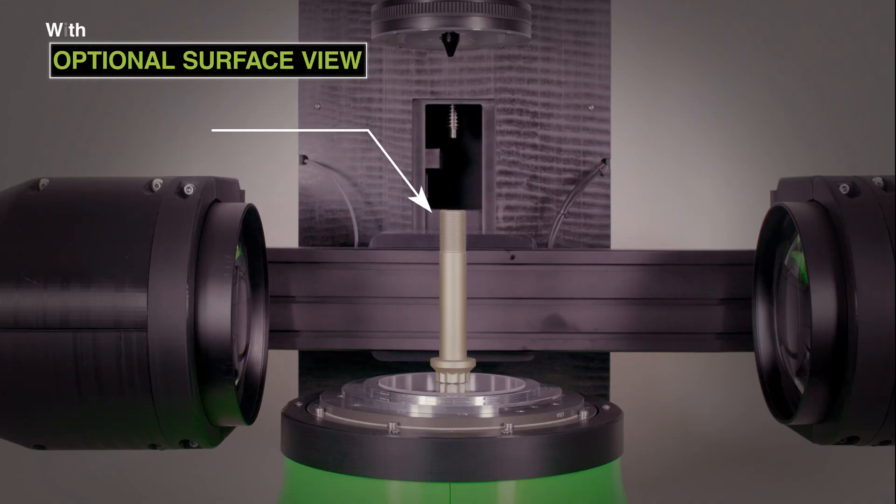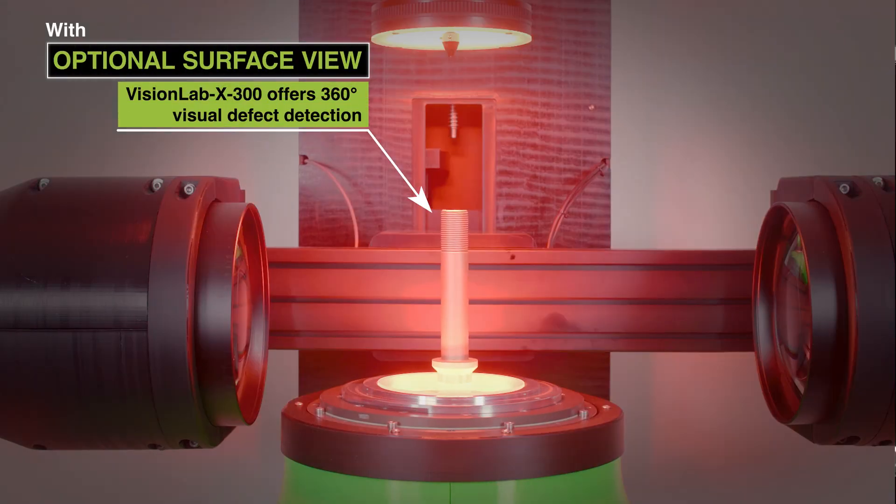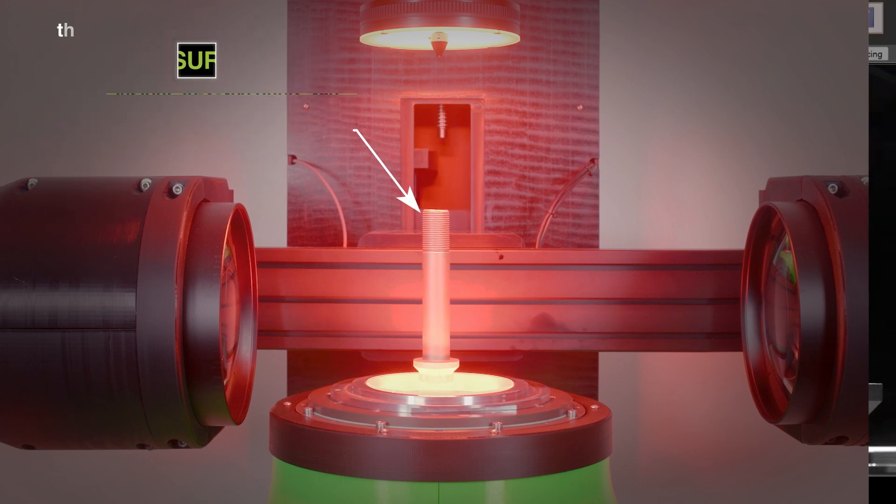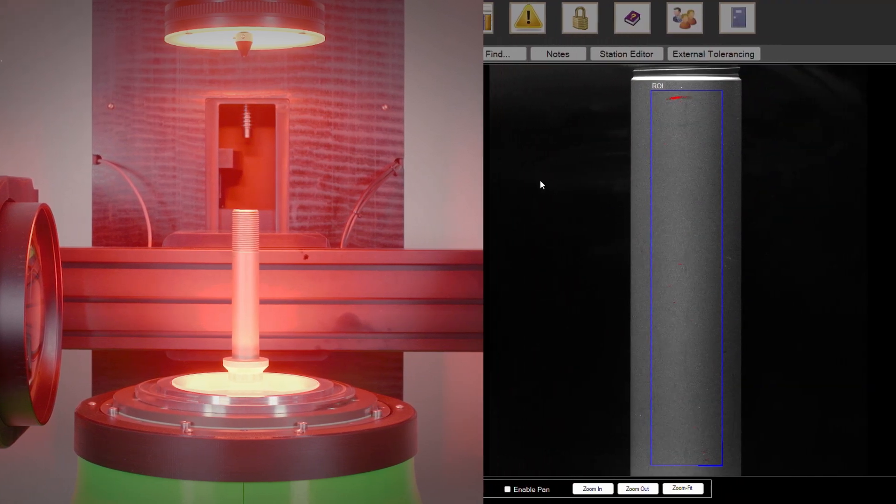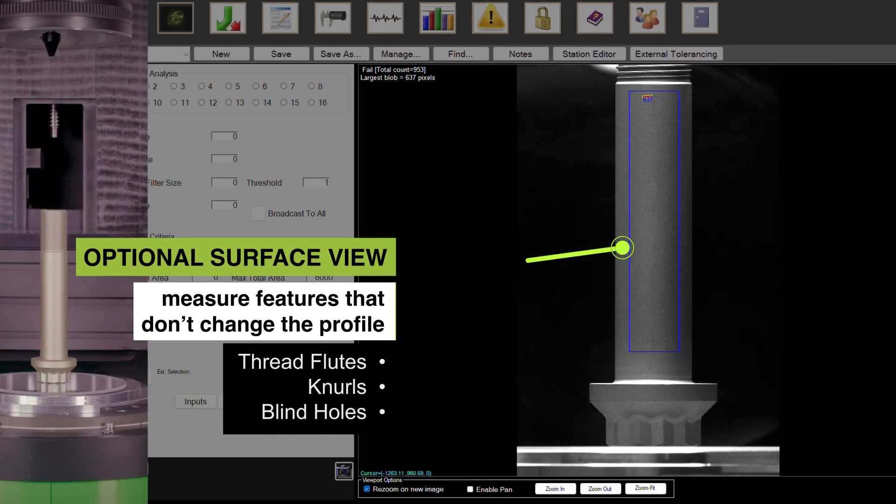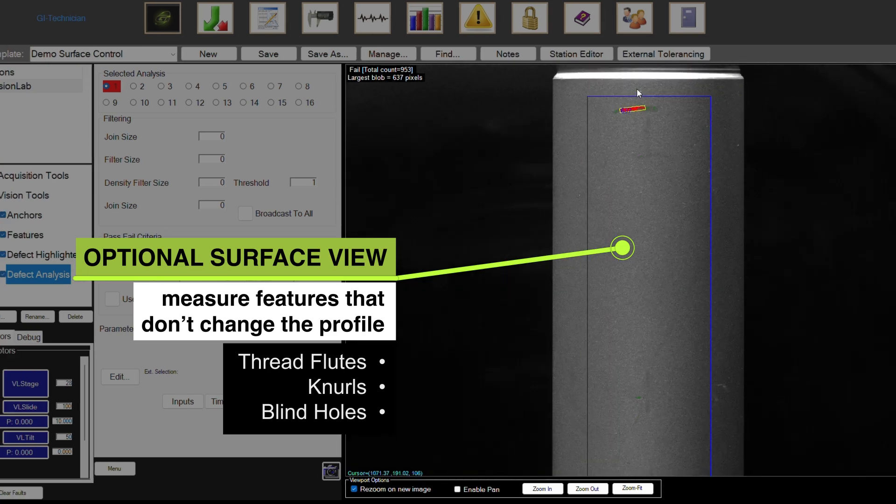With optional surface view, VisionLab X300 offers 360-degree visual defect detection, plus the ability to measure features that don't change the profile, such as thread flutes, knurls, and blind holes.